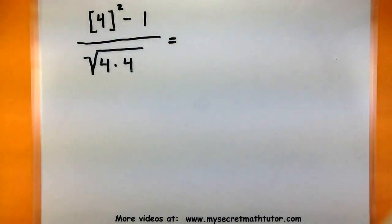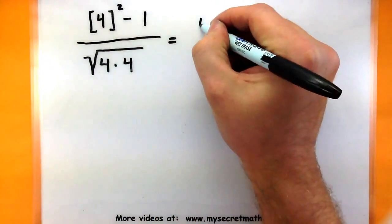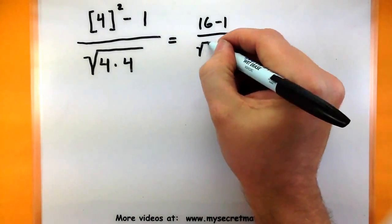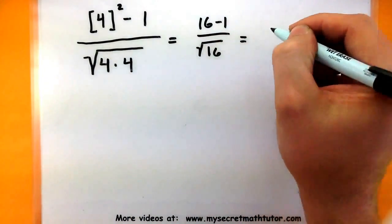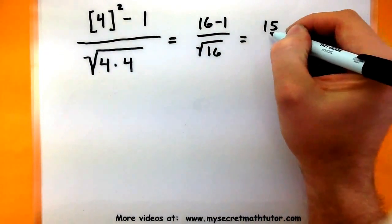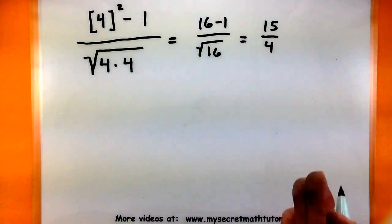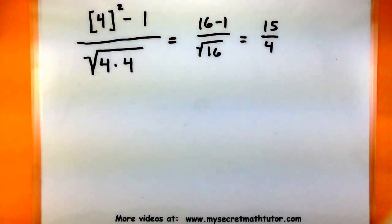To finish this problem off, we basically just go through and evaluate all of these numbers. So I have 4 squared, 16. 4 times 4 on the bottom, square root of 16. So 15 over 4. So I could say that this is the limit of my original function. And you can see that it all comes from taking those basic limit laws and breaking it up all over the individual pieces.